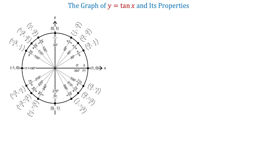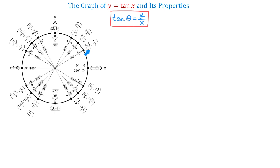Before we graph the tangent function, let's take a look at the unit circle. We know that by definition, tangent of an angle theta equals y divided by x. So, to find the value of tangent at each of the given points on the unit circle, we need to divide the y-coordinate by the x-coordinate.